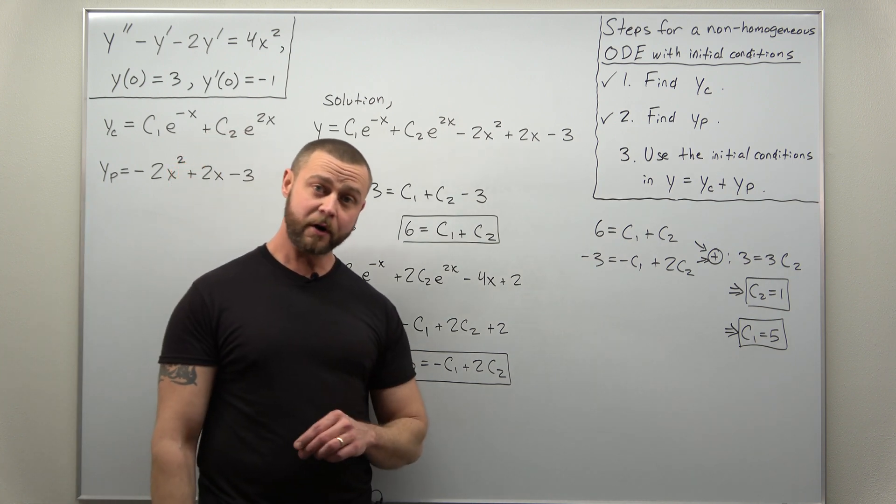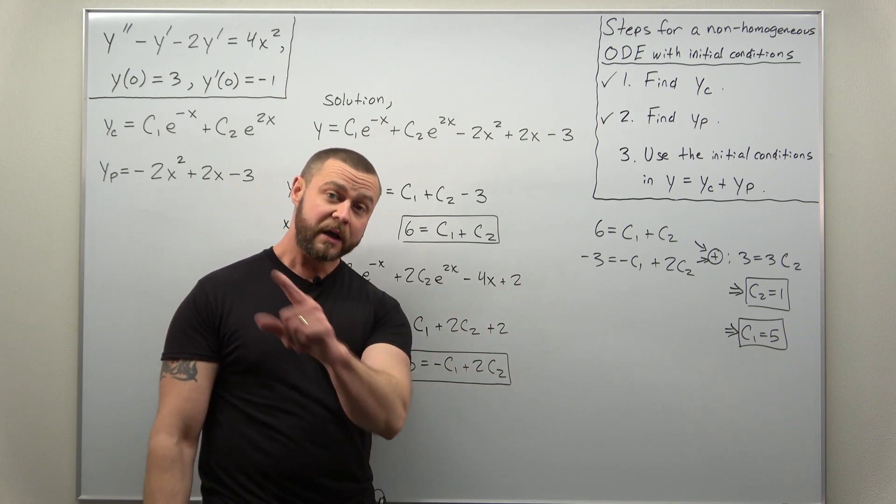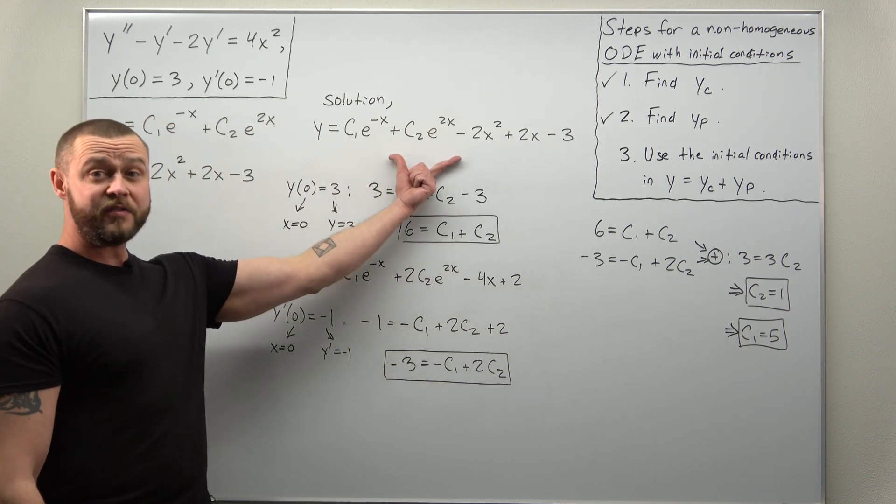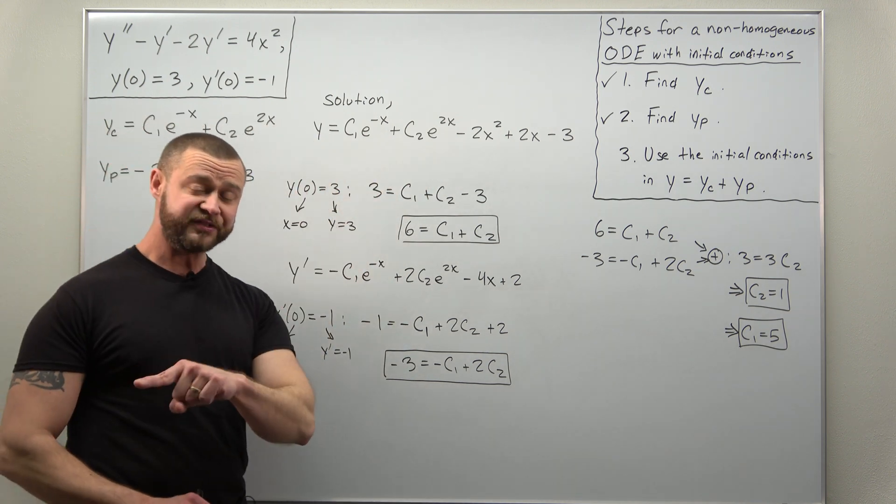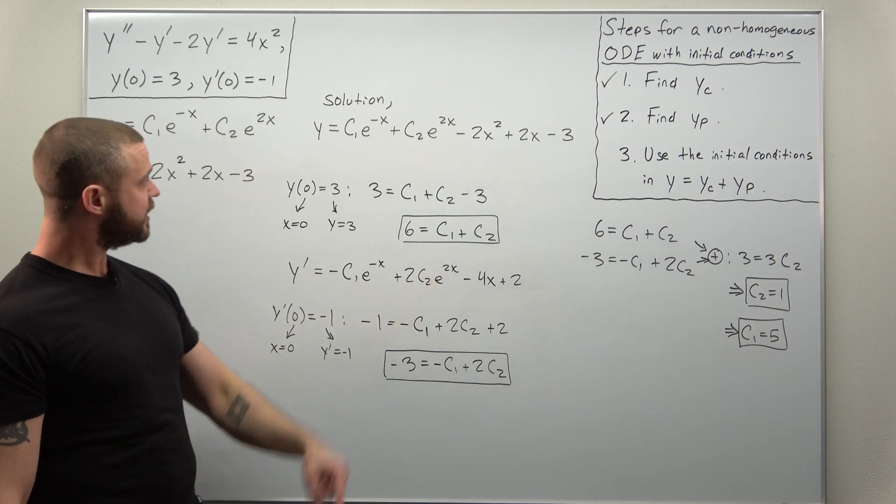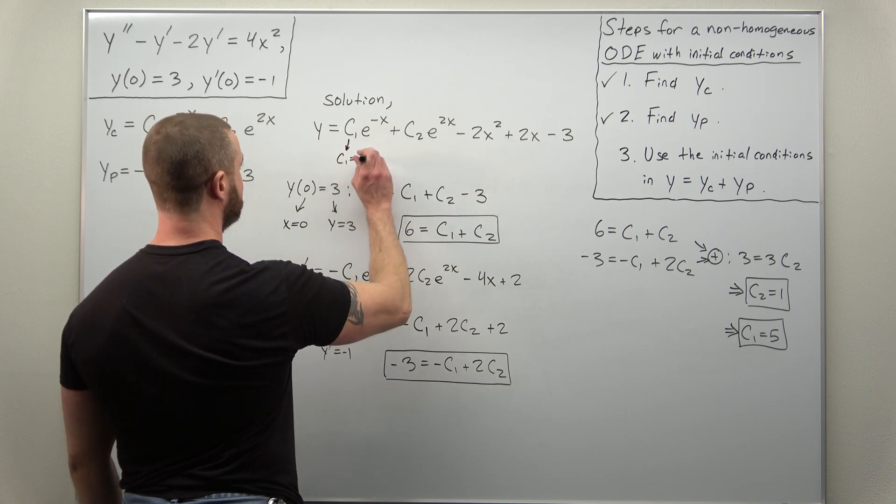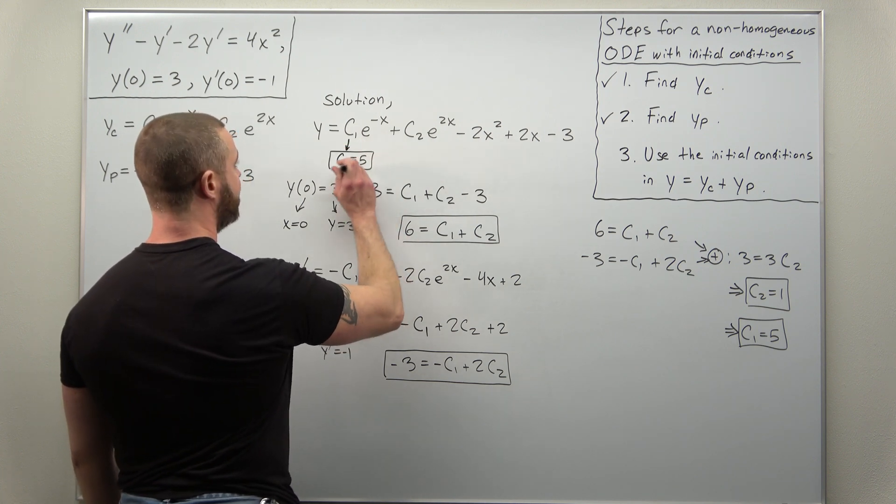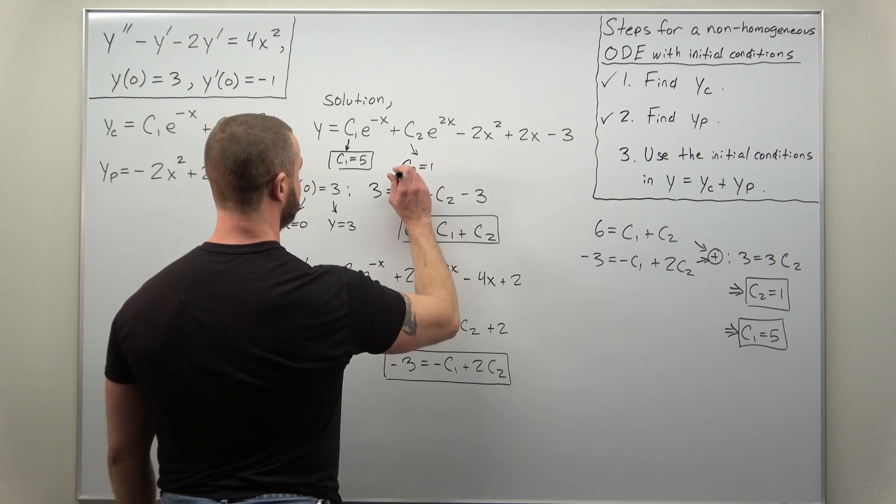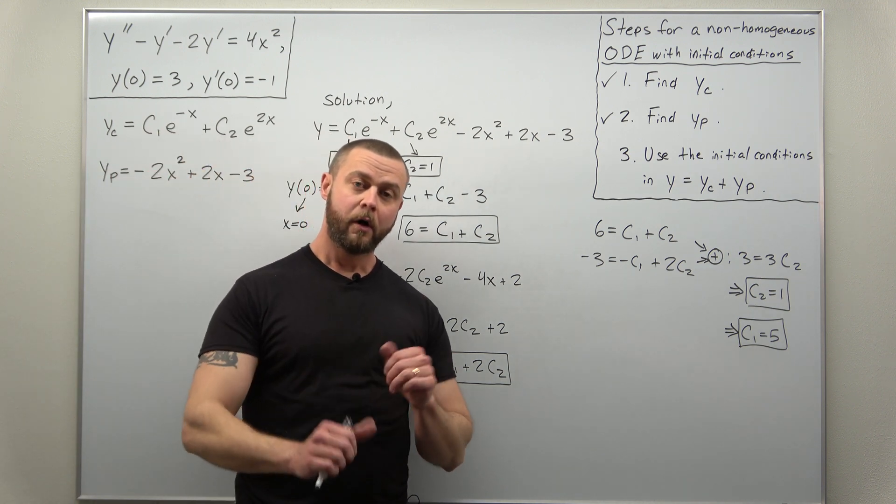All right. And this video could have been much shorter, but I want to go through this so you could see it. Again, the only difference is where you make use of your initial conditions in the full solution, YC plus YP. So with that, you can plug in your values for C1. We have that here. C1 is five. And we found C2 as one.